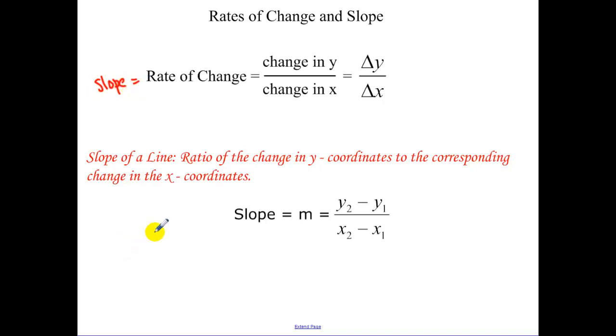So the slope of the line is the ratio of the change or the difference in the y coordinates to the corresponding change in the x coordinates. So if you have two points, you subtract the y's, and then in the same order, you subtract the x's.